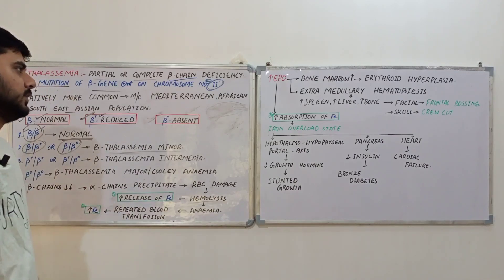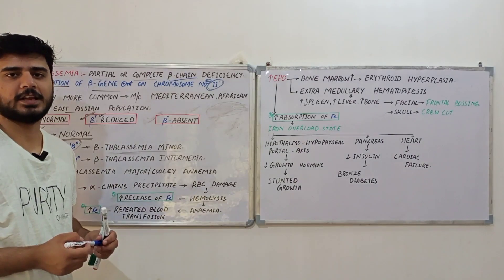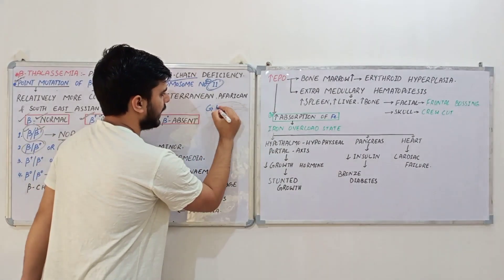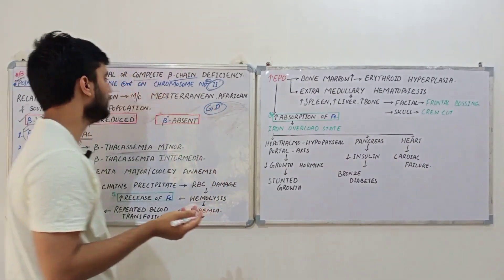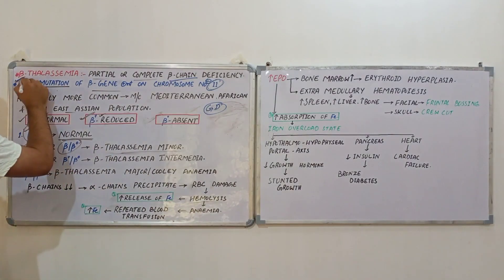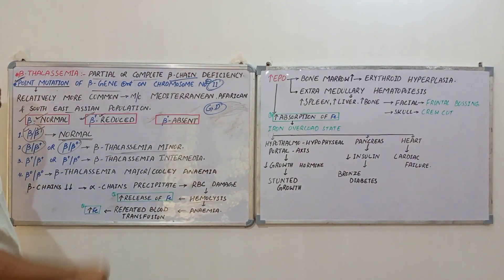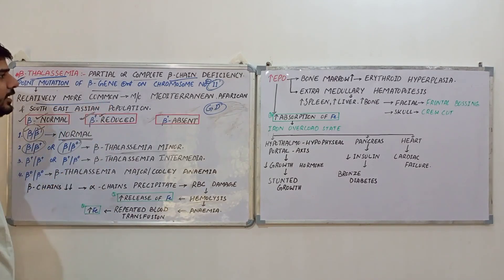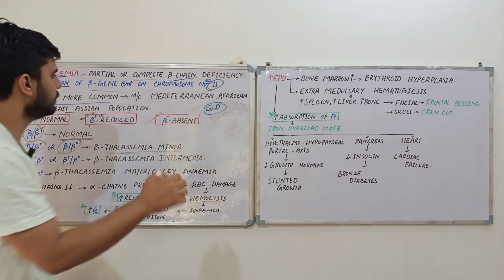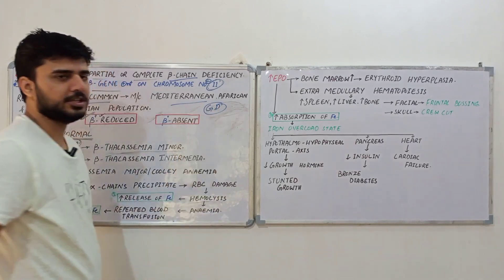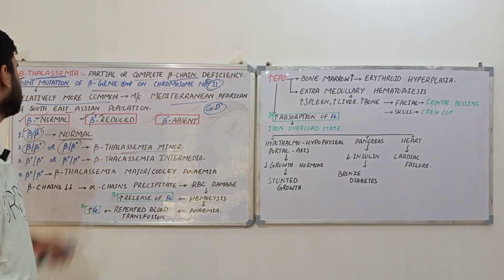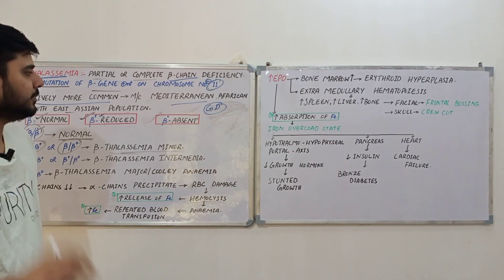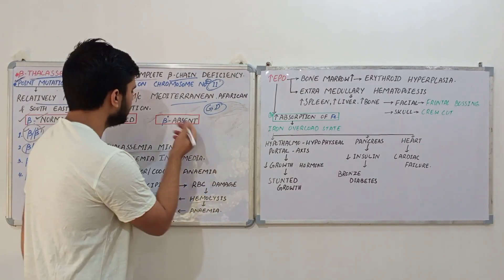As we discussed, alpha thalassemia was caused due to gene deletion. You should know that point mutations are more common than gene deletions, therefore beta thalassemia is relatively more common than alpha thalassemia. It is mostly seen in Mediterranean regions and also in African and Southeast Asian populations.